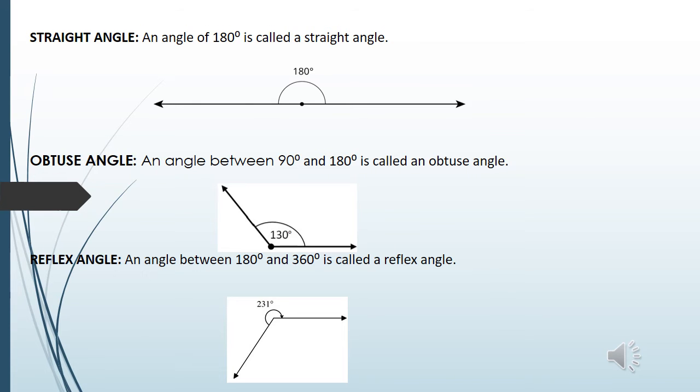Reflex angle: an angle between 180 degrees and 360 degrees is called a reflex angle. Is it clear? Thank you.